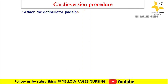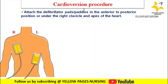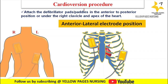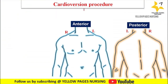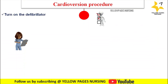Attach the defibrillator pads or paddles in the anterior-posterior position or under the right clavicle and apex of the heart. For the anterior-lateral electrode position, the anterior electrode is placed in the right parasternal area at the mid-clavicular line, and the lateral electrode is placed with its center in the left mid-axillary line at the level of the V6 ECG electrode. For the anterior-posterior position, the anterior electrode is placed in the left parasternal area (precordium) and the posterior electrode in the left lower scapular region with the electrode edge left to the spinal column. Before placing the paddles, apply conductive gel or attach gel pads to the chest wall.